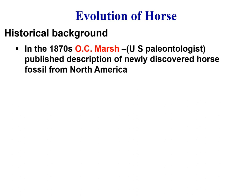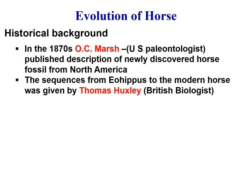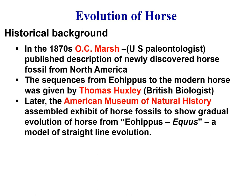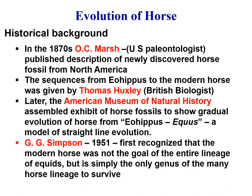In the 1870s, O.C. Marsh, a U.S. paleontologist, published a description of newly discovered horse fossils from North America. The sequence from Eohippus, the primitive horse, to the modern horse was given by Thomas Huxley, a British biologist. Later, the American Museum of Natural History assembled an exhibit of horse fossils to show the gradual evolution of the horse from Eohippus to the modern horse as a straight line of evolution.